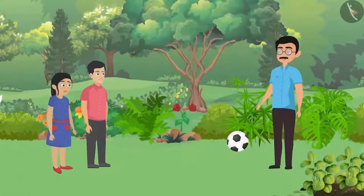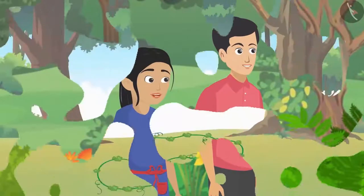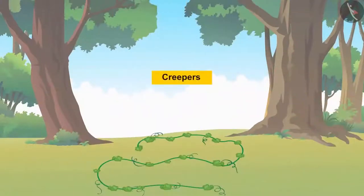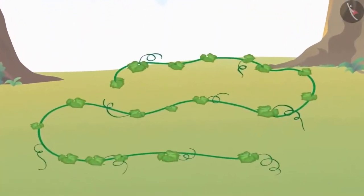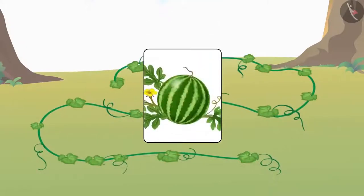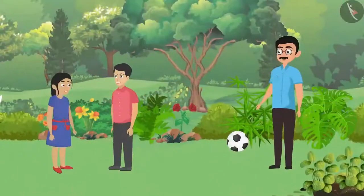On the other hand, creepers don't even rise from the ground. The stems of creepers are very soft, which is why they spread along the earth. Watermelon, musk melon, and pumpkin are examples of creepers.